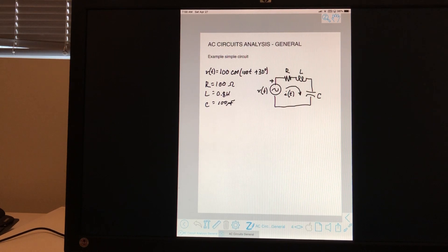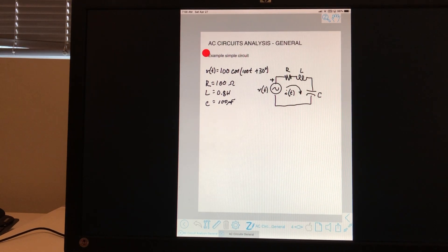So we have known values for the voltage. And you can see that it is given as a sinusoid, 100 cosine 100T. So the omega is 100, and the amplitude is 100, and there's a phase shift of 30 degrees.